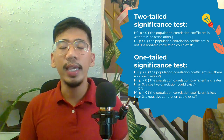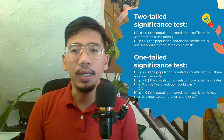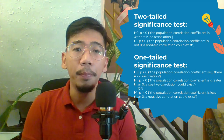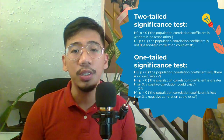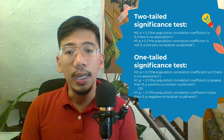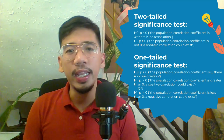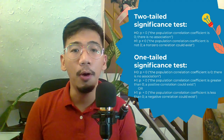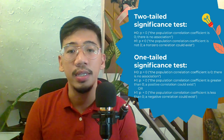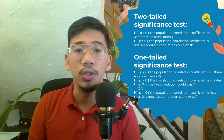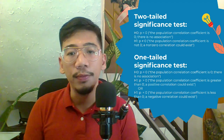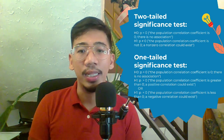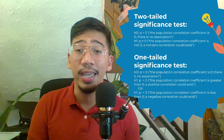For a one-tailed significance test, the null hypothesis is that rho equals 0, meaning the population correlation coefficient is 0 and there is no association. You can have two alternative hypotheses: the first is rho greater than 0, meaning the population correlation coefficient is greater than 0 and a positive correlation could exist; or rho less than 0, meaning the population correlation is less than 0 and a negative correlation could exist.